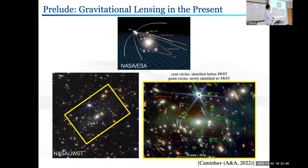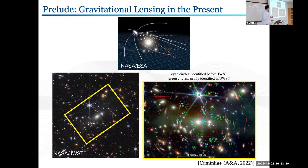We can easily observe gravitational lensing. When a light source is very far away from us and in the middle there is some massive system like a galaxy or galaxy cluster, the light from the far source travels around this massive lens system, and the path is bent by the gravitational potential of the lens system. This image is the first publicly released image from the James Webb Space Telescope (JWST), and in the boxed area there are many lens images — cyan circles identified before JWST and green circles newly identified with JWST. In electromagnetic wave-based astronomy, gravitational lensing is very common.